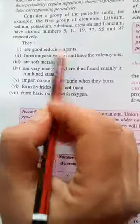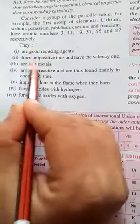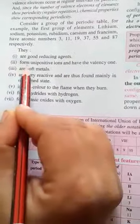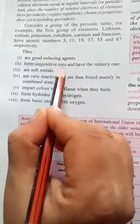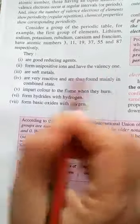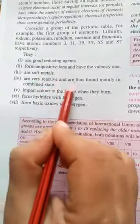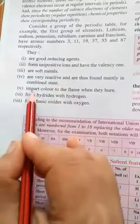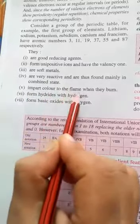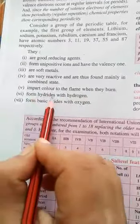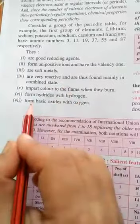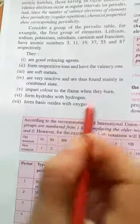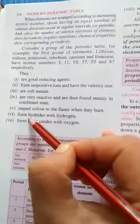They are good reducing agents, form unique positive ions and have the valency 1. They are soft metals, very reactive, and are thus found mainly in combined state. All impart color to the flame when they burn, form hydrides with hydrogen, and form bases or basic oxides with oxygen.